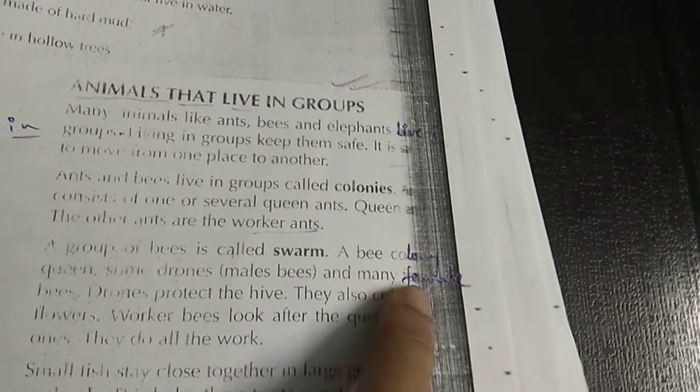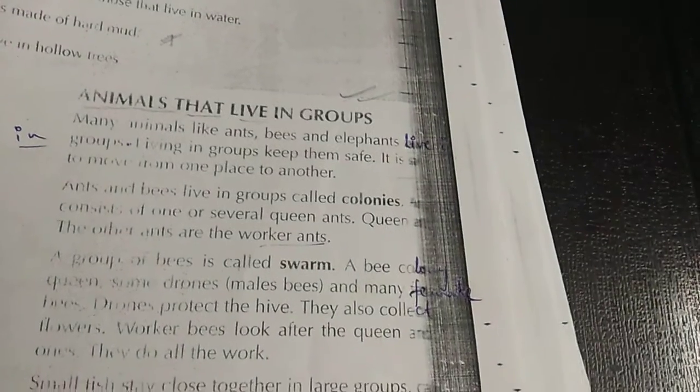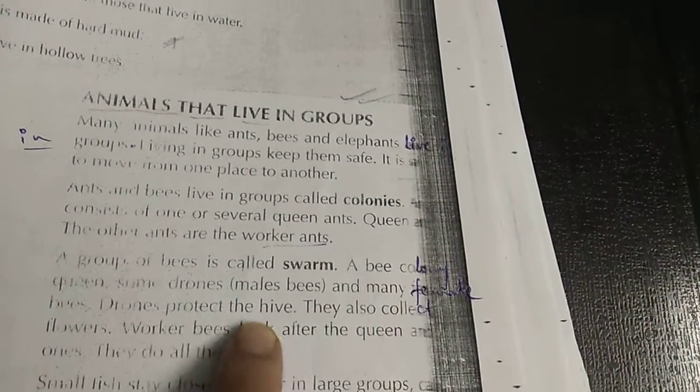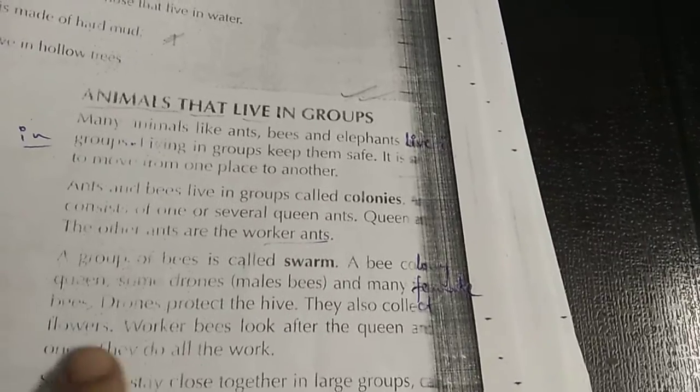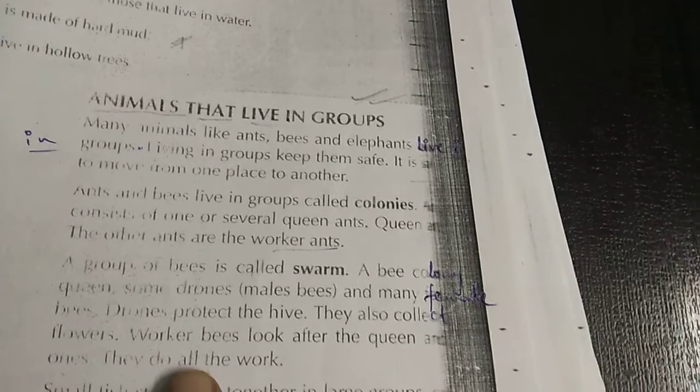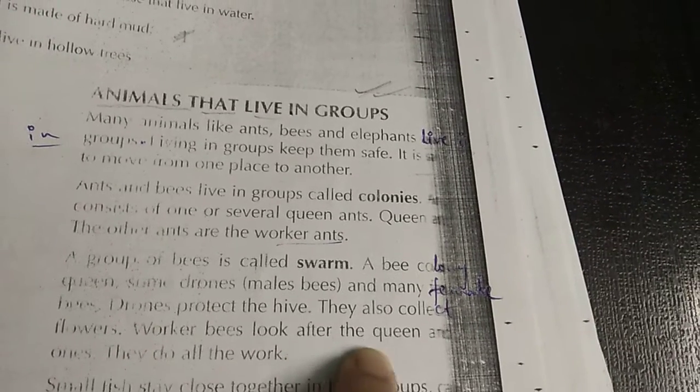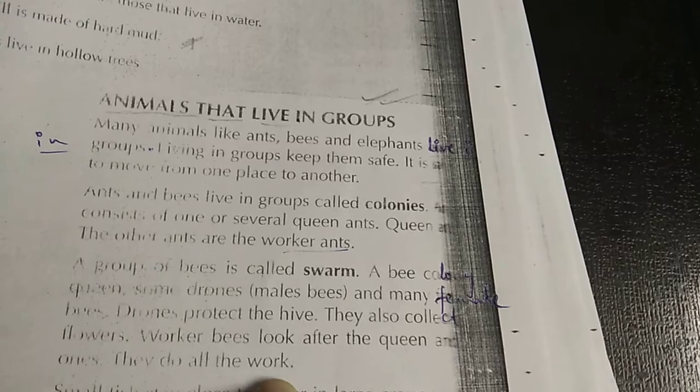Male bees and many female. Male bees and female bees are there. Drone protect the hive. They also collect flowers, nectar from the flowers. Worker bees look after the queen and the other ones and they do all the work.